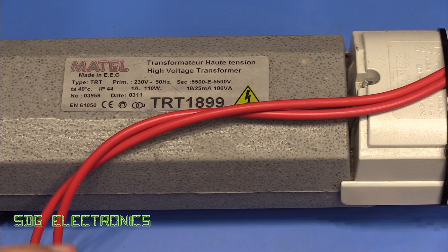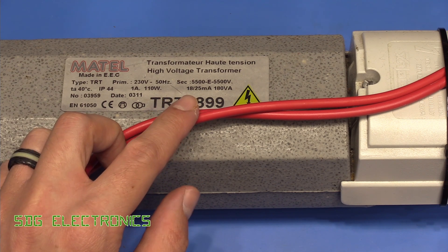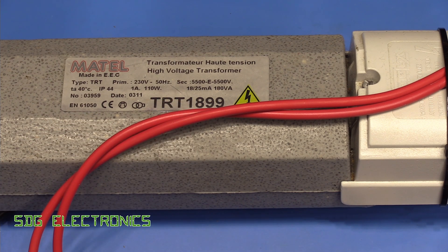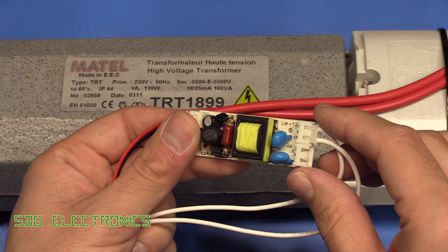Now for this demonstration, I'm using a neon sign transformer that's capable of outputting 11,000 volts at 25 milliamps. It is possible to use much smaller power supplies such as this high voltage cold cathode fluorescent driver.